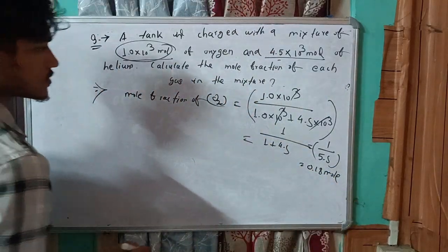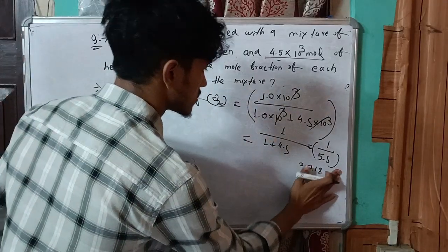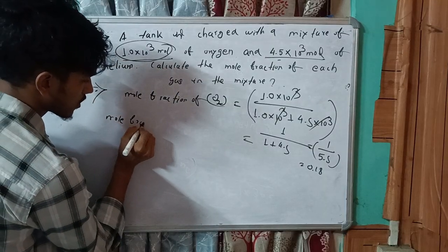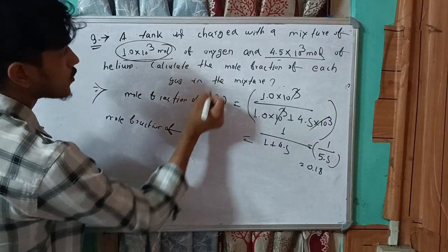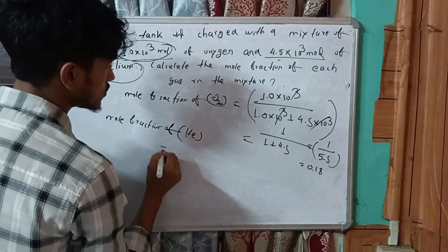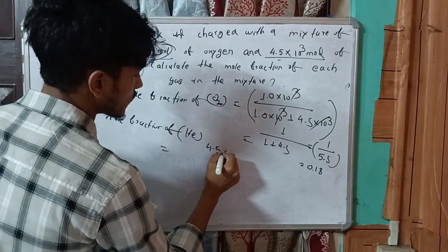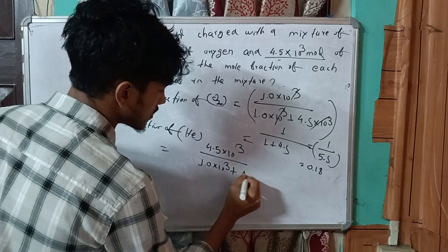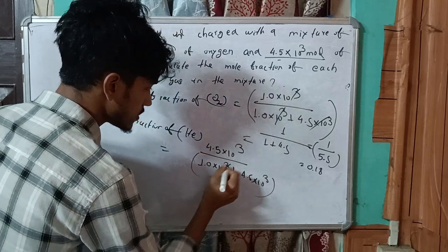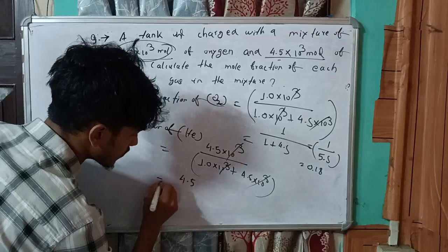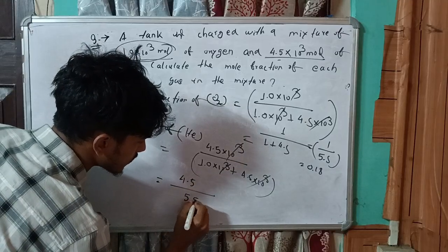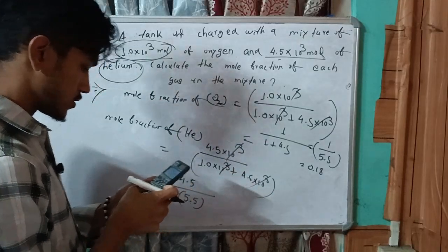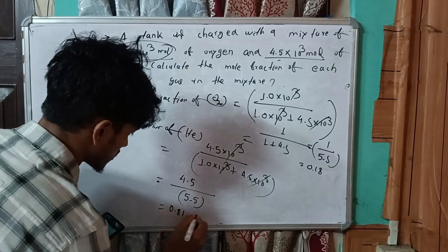Mole fraction of helium = 4.5 × 10³ divided by (1.0 + 4.5) × 10³ = 4.5/5.5 ≈ 0.81. The two mole fractions sum to approximately 1.0, as expected.